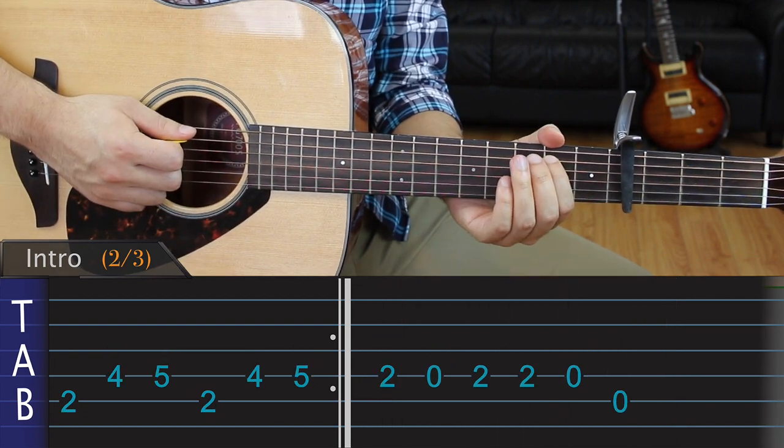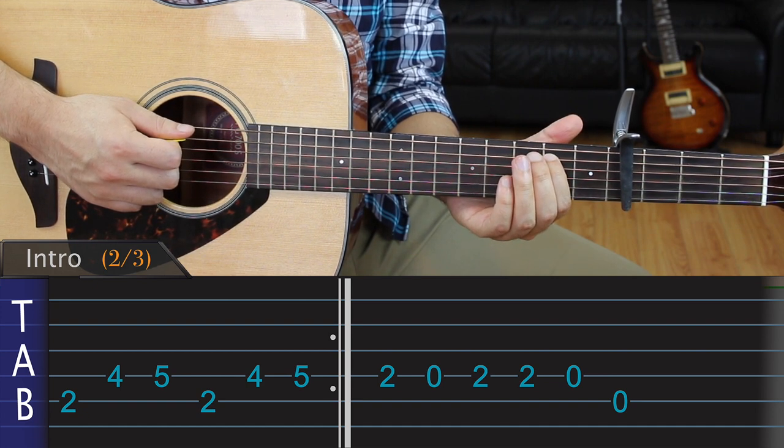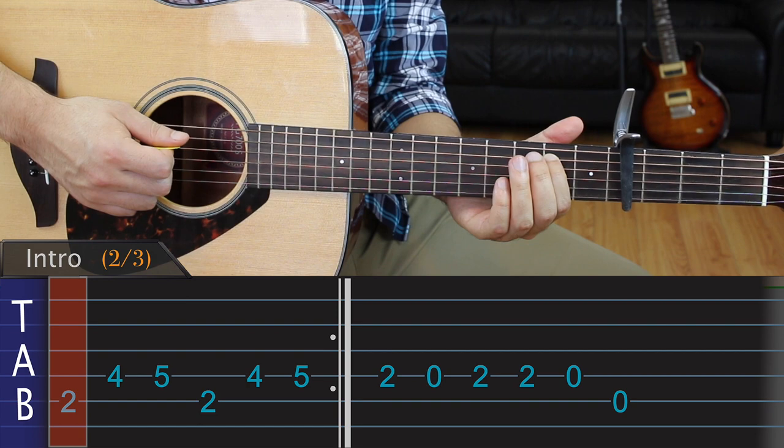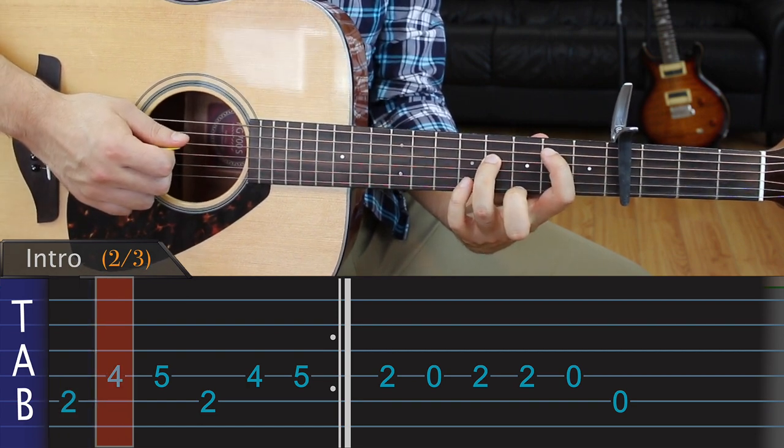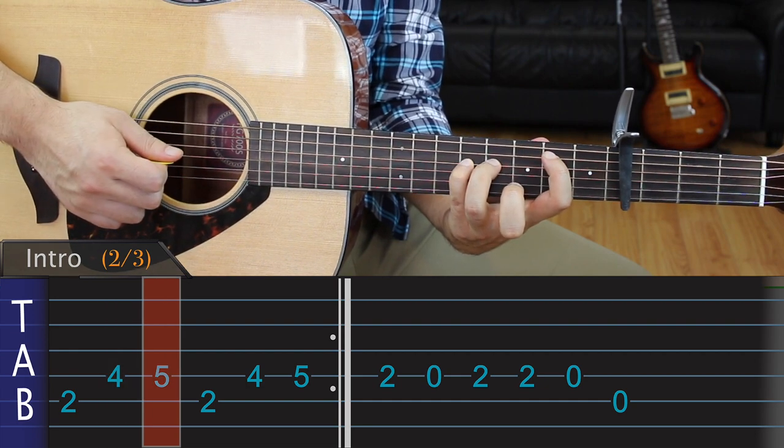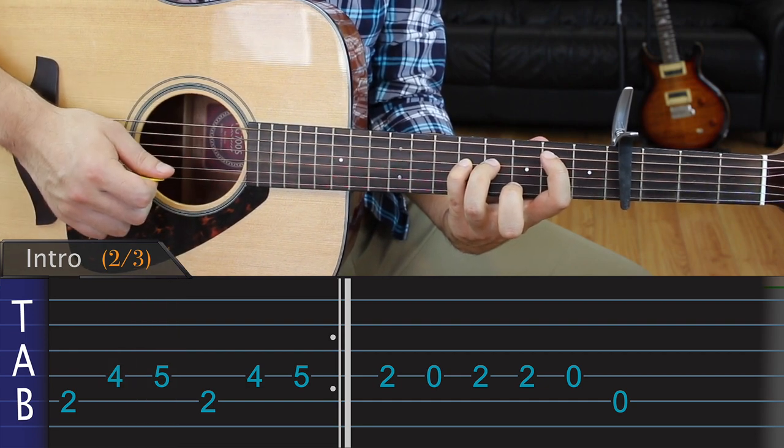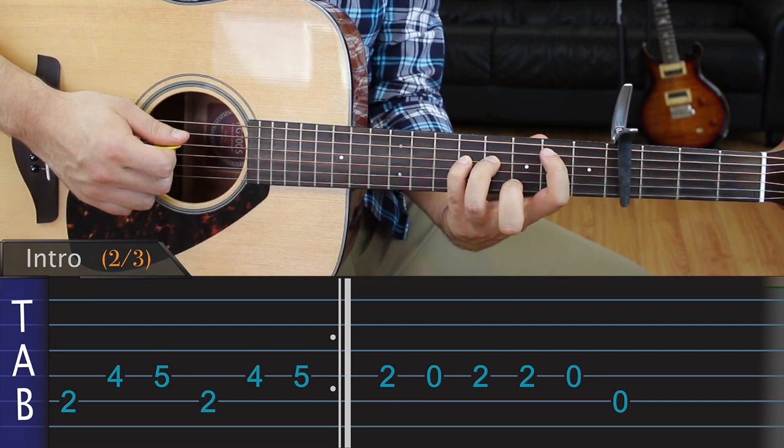The following part is a little bit tricky. We'll start by playing the second fret of the A string with our index, then the fourth fret of the D string with our ring finger, followed by the fifth fret of the D. Now, I'm using my pinky to play this note, but if it's too much of a stretch for your hand, you can always play it with your ring finger like this.